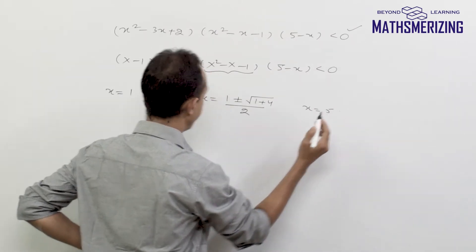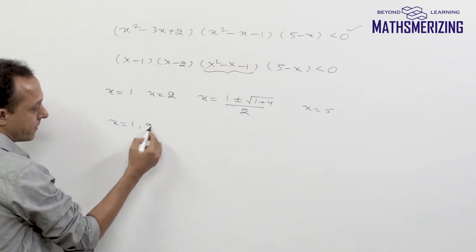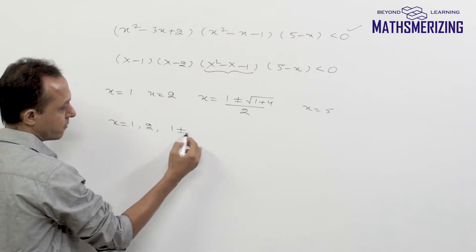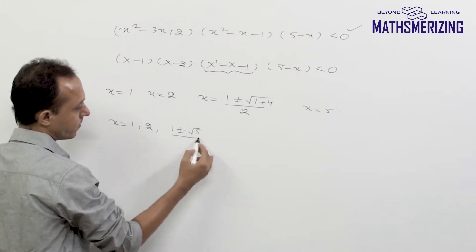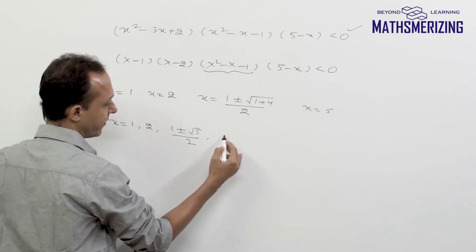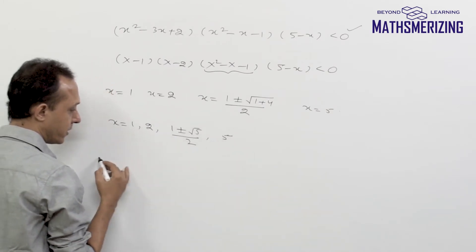And then here will be x equal to 5. So the roots of this expression are 1, 2, 1 plus or minus under root 5 divided by 2, and then 5. So now I'll put these roots on the number line.